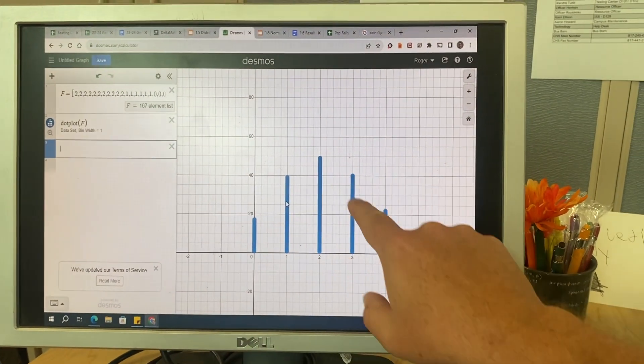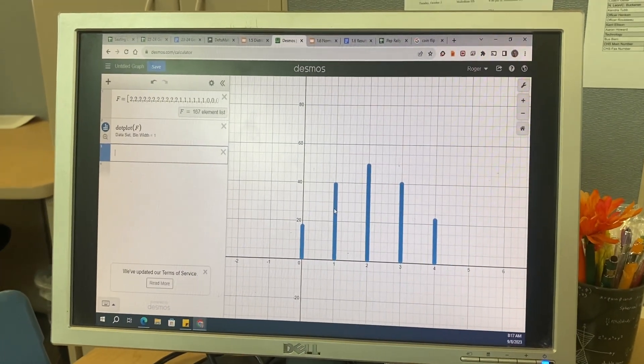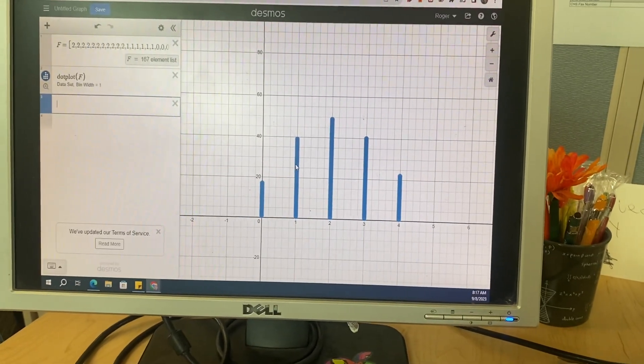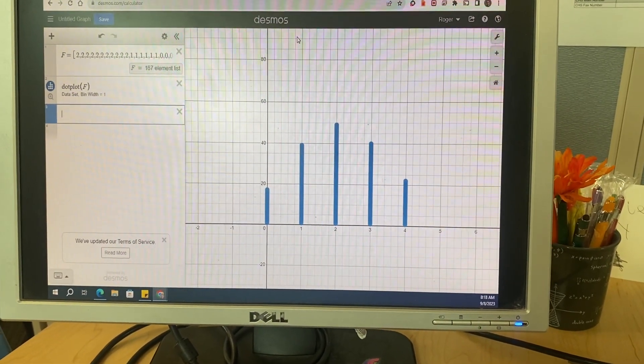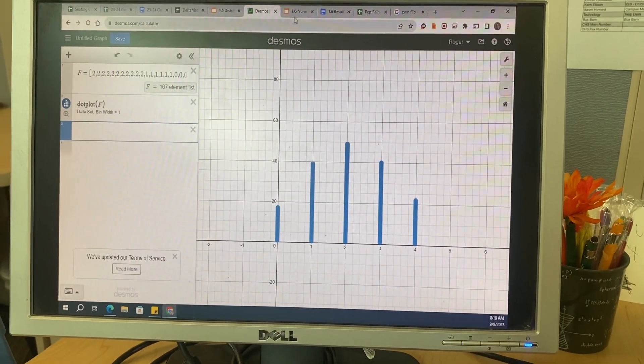You can kind of see that bell curve there. We get the increase, we get the decrease. Is it perfect? No. I kind of added in results from a whole bunch of classes to kind of get where we were, but you end up with something that's relatively well distributed.